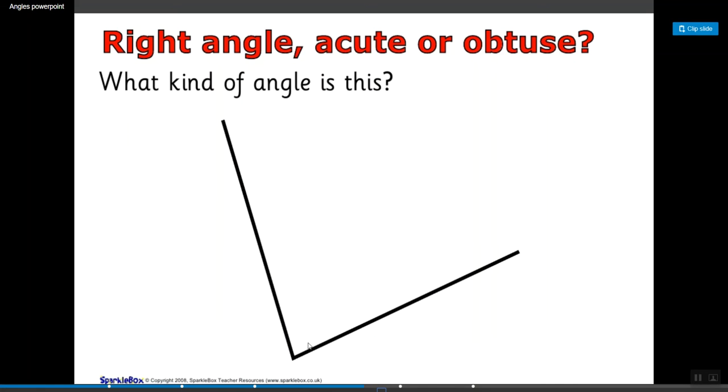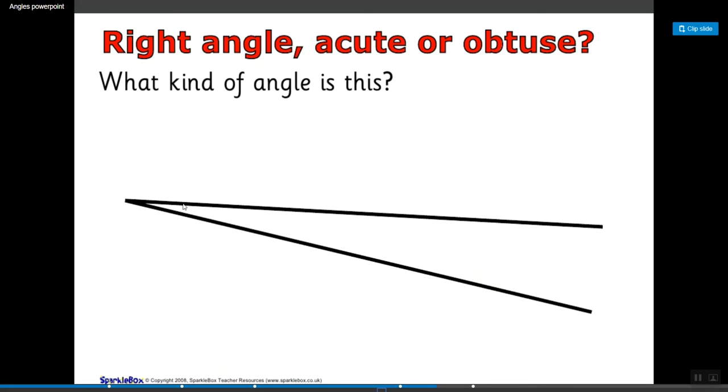Here, this one, if you look at it, it kind of looks like these lines come together and meet where you could make a square here, so that must mean that it's a right angle even though it's not straight up and down, it's still a right angle. This one, the opening is kind of tiny, it's less than 90 degrees so we know that it must be acute.